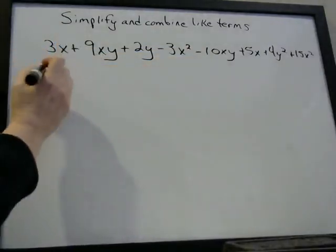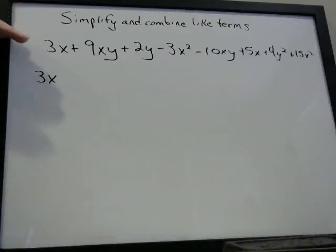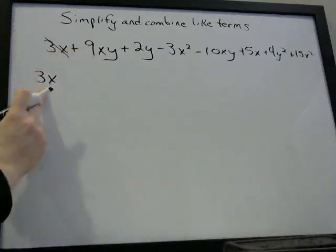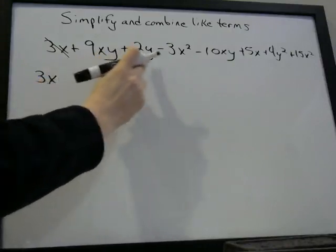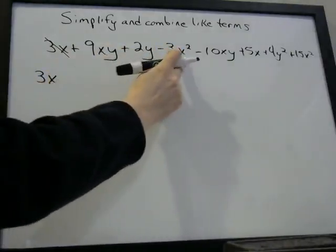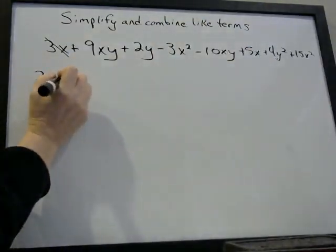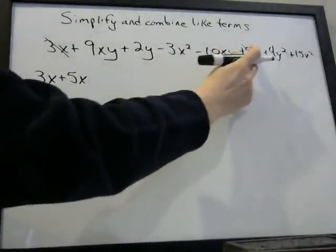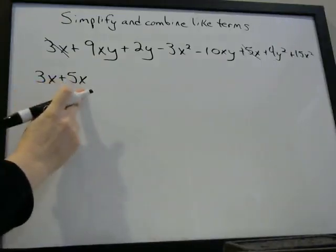We'll start at the beginning. We have 3x — when you have a big long expression like this, I like to cross out terms as I write them down so I know I got them. So we wrote down the 3x. Look for any other x's: well, that's xy — not the same as x; that's y; that's x squared — not the same as x. Here's a 5x, so we write plus 5x. So we have 3x plus 5x together.